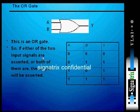If either of the two input signals are asserted, or both of them are, the output will be asserted. This clearly indicates that if one of the inputs is high, it gives an output of high. If both inputs are high, again high. For either case, we call it an OR when we get a high output.